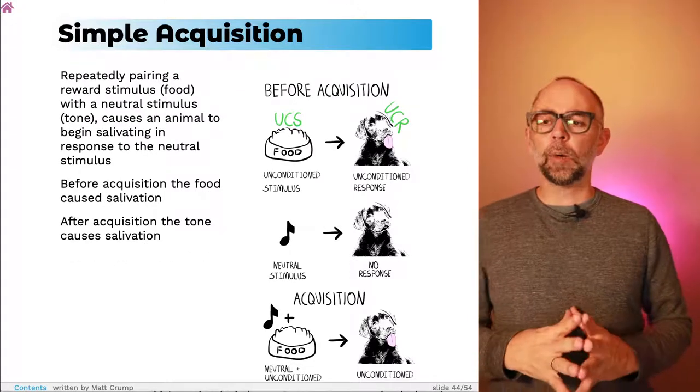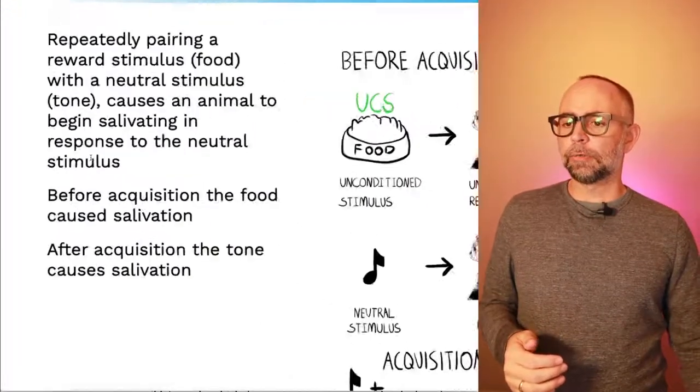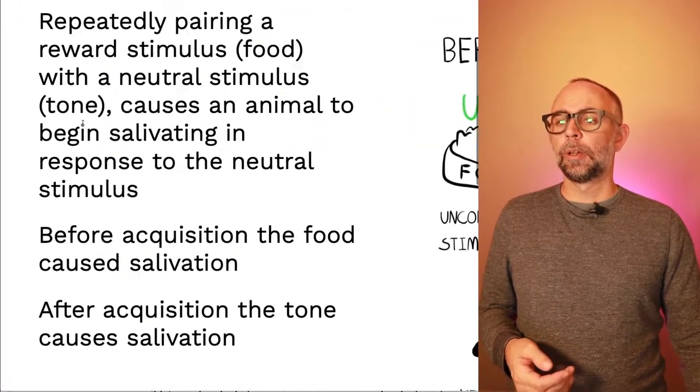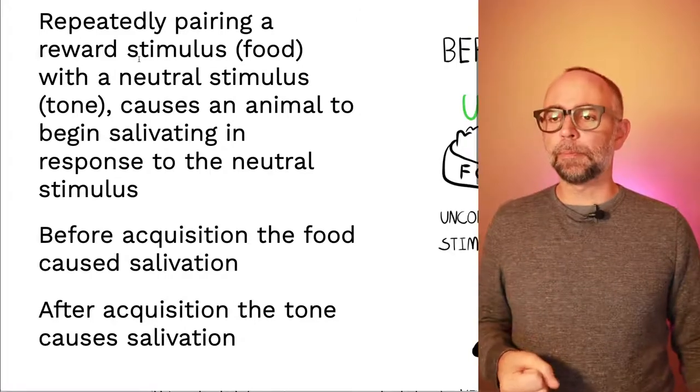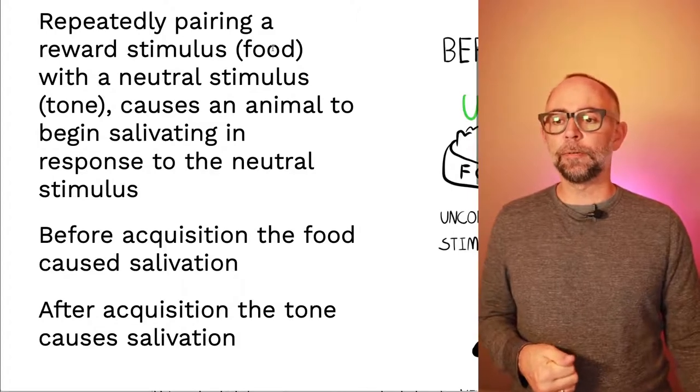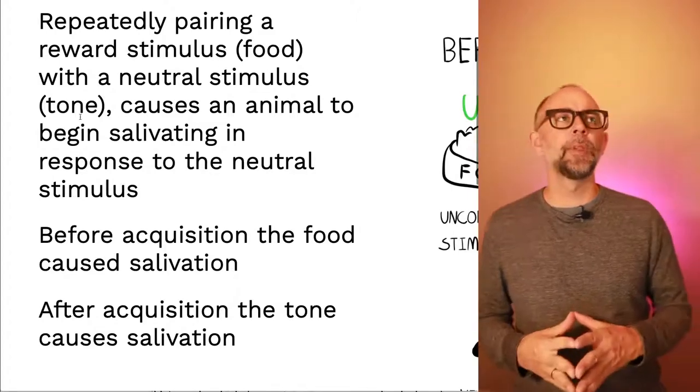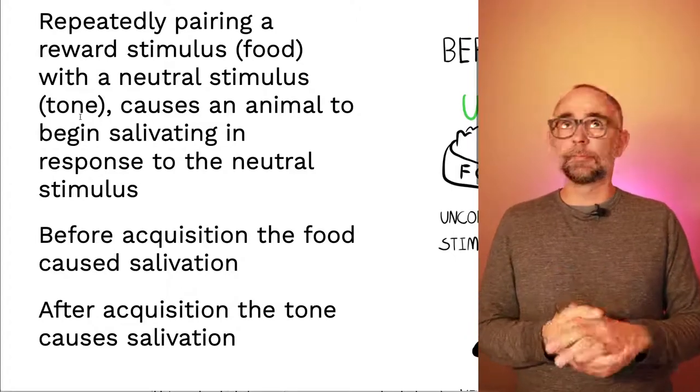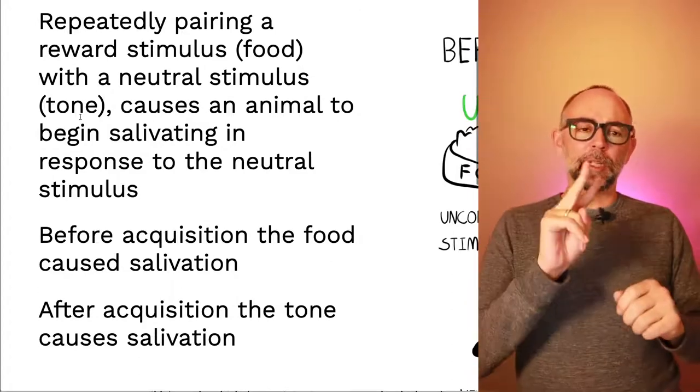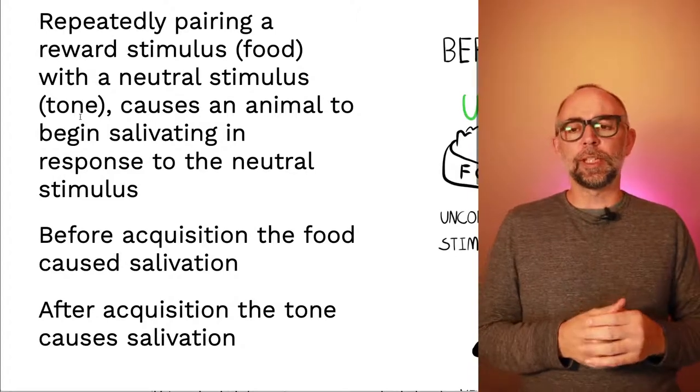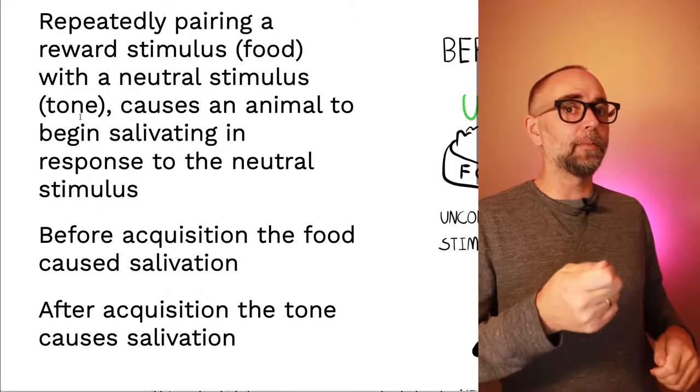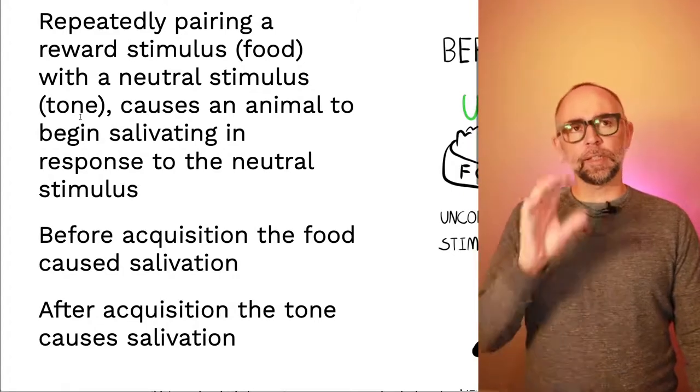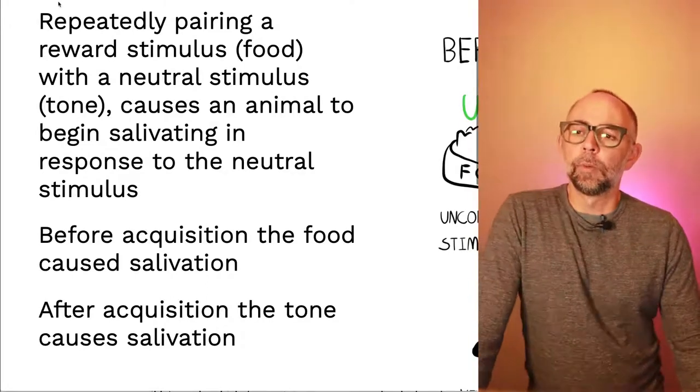We will start with a simple acquisition procedure. Let's read this first and then take a look at this cartoon that I drew to explain simple acquisition. So here's the idea. In a simple acquisition procedure, you can repeatedly pair a reward stimulus like food with a neutral stimulus like a tone. I'm talking about having an animal, say like Ernie from before, or a dog, or another kind of animal. And what we're going to do is present that animal with the reward stimulus and the neutral stimulus at the same time. So you might hear a tone and get some food. That's a pairing. And you do that a whole bunch of times. This is called the acquisition process, the multiple pairings of the reward stimulus and the neutral stimulus.